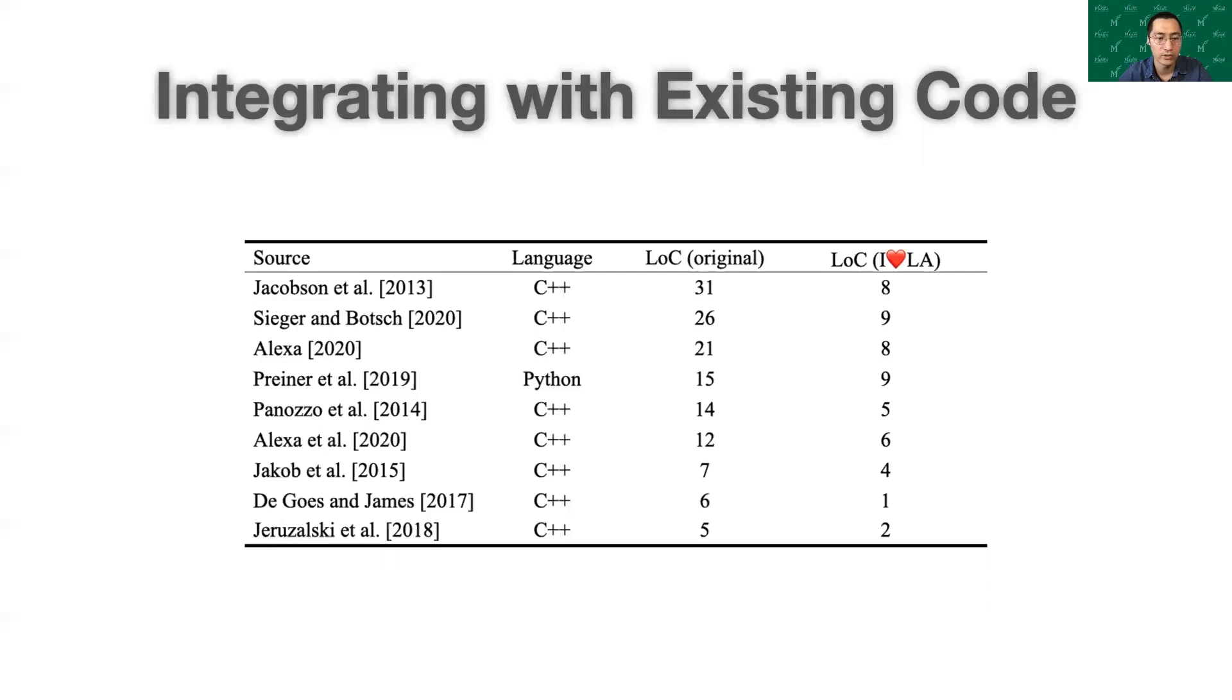Overall, the I❤LA code is shorter, and more closely matches the paper formula, than the existing code it replaced. Importantly, it can also be compiled to multiple output languages.